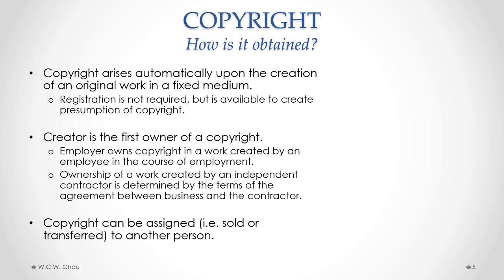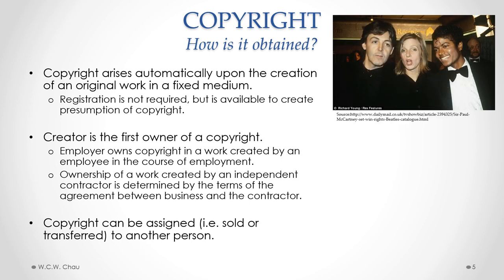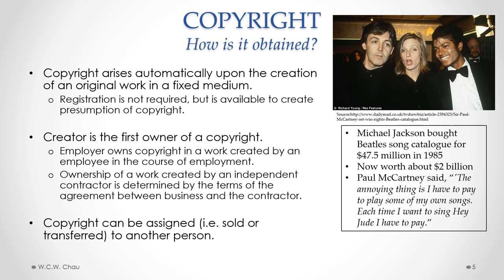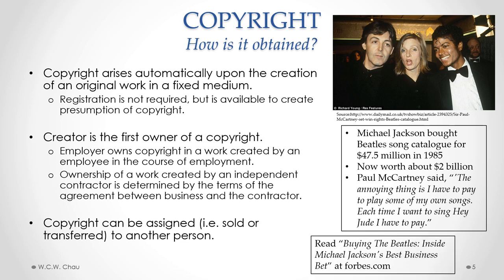A copyright can be assigned from one person to another or to another company — in other words, copyright ownership can be bought and sold. For example, back in 1985, Michael Jackson bought the Beatles song catalog for what was then a huge sum of $47.5 million. That song catalog is now estimated to be worth about $2 billion, and Paul McCartney is quoted as saying that the annoying thing is he has to pay to play some of his own songs — each time he wants to sing Hey Jude, he has to pay. There is a very interesting article about this in Forbes.com.